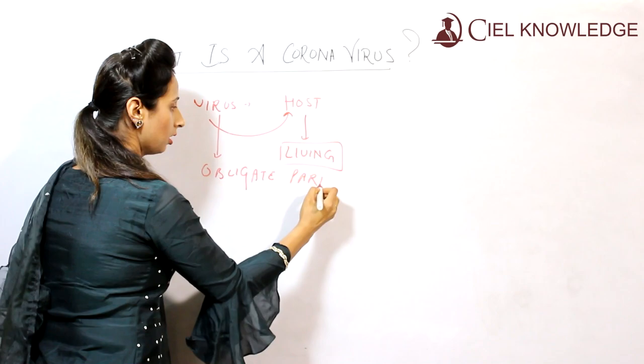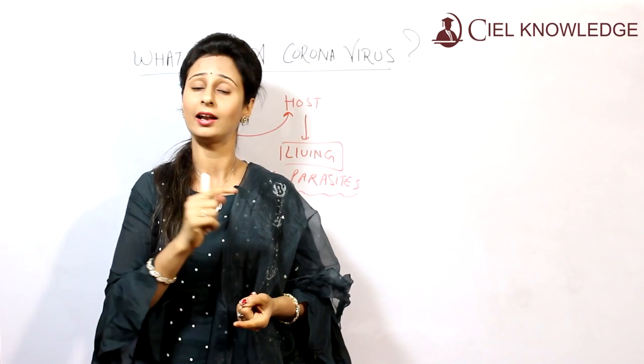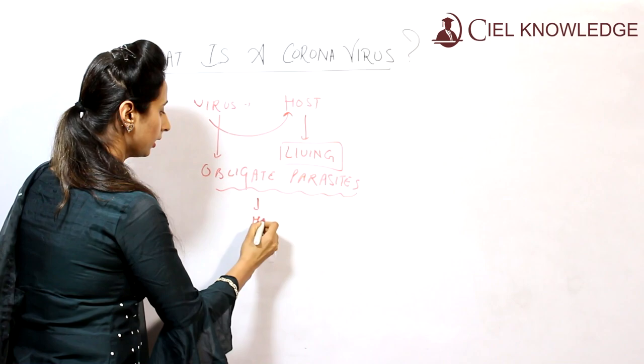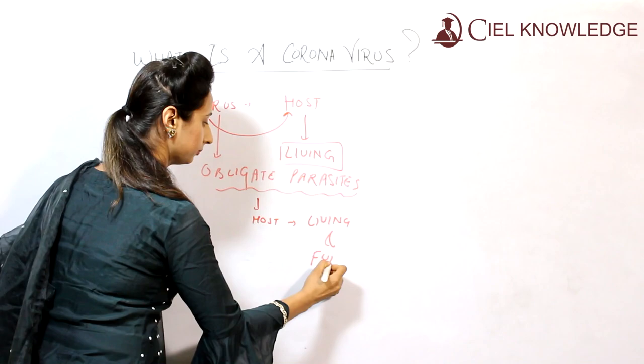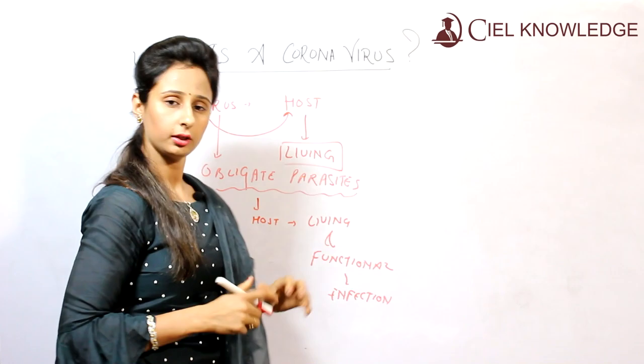What do you mean by obligate parasites? Obligate parasites means they require a host to complete their life cycle — for their growth, for their development. They require a host, and within that host they become living and functional. And due to this, they will spread infection. This is a general introduction about the virus.